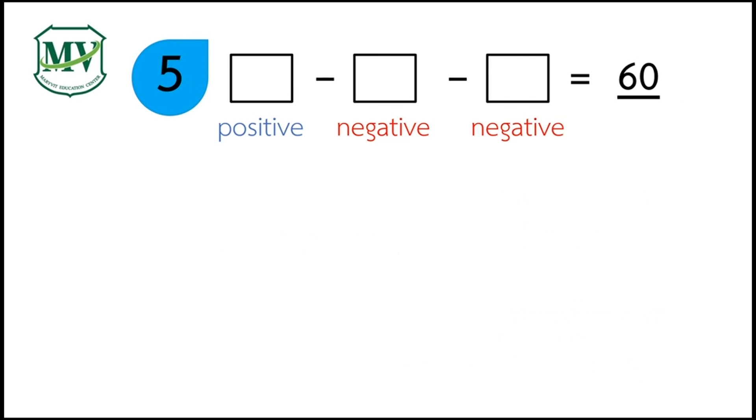Question number 5. Fill in the 3 boxes with integers to get positive 60. The first integer should be positive, followed by 2 negative integers. Let's solve this problem.